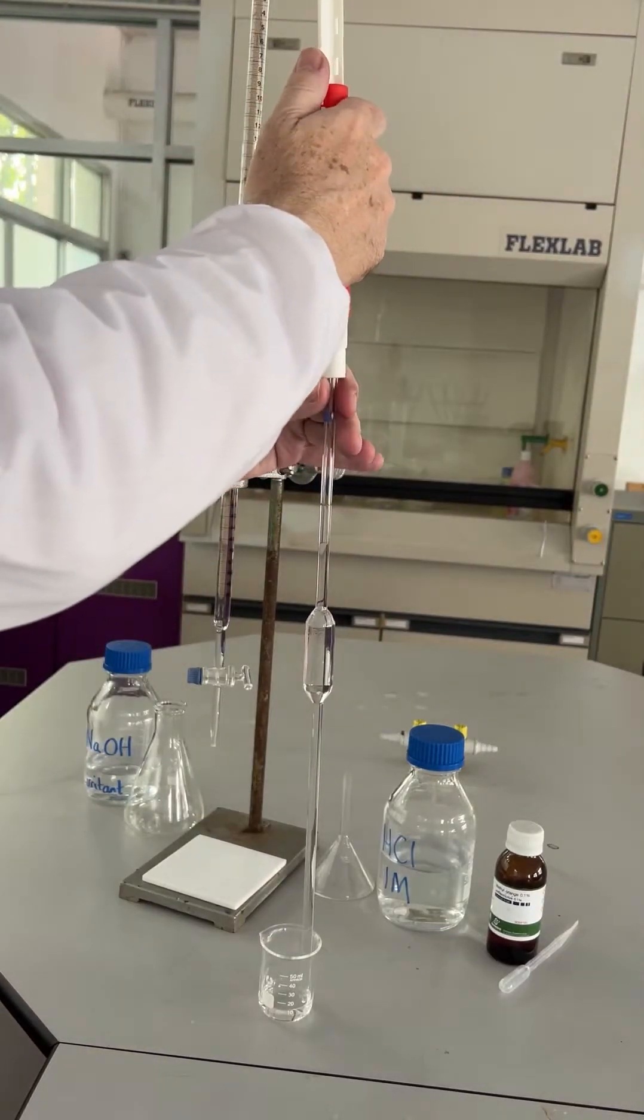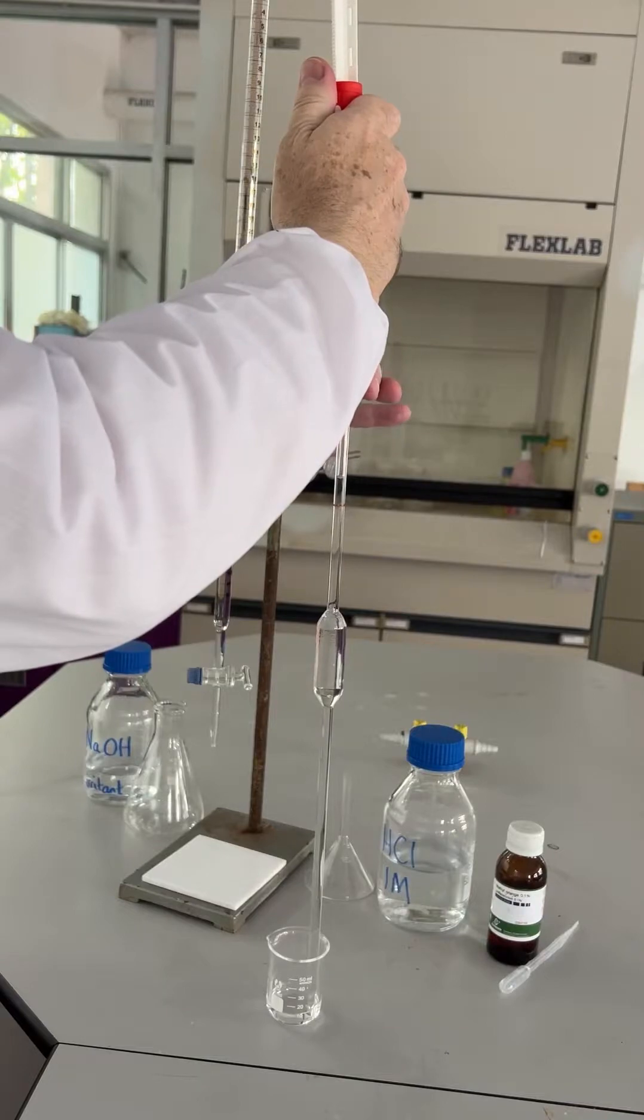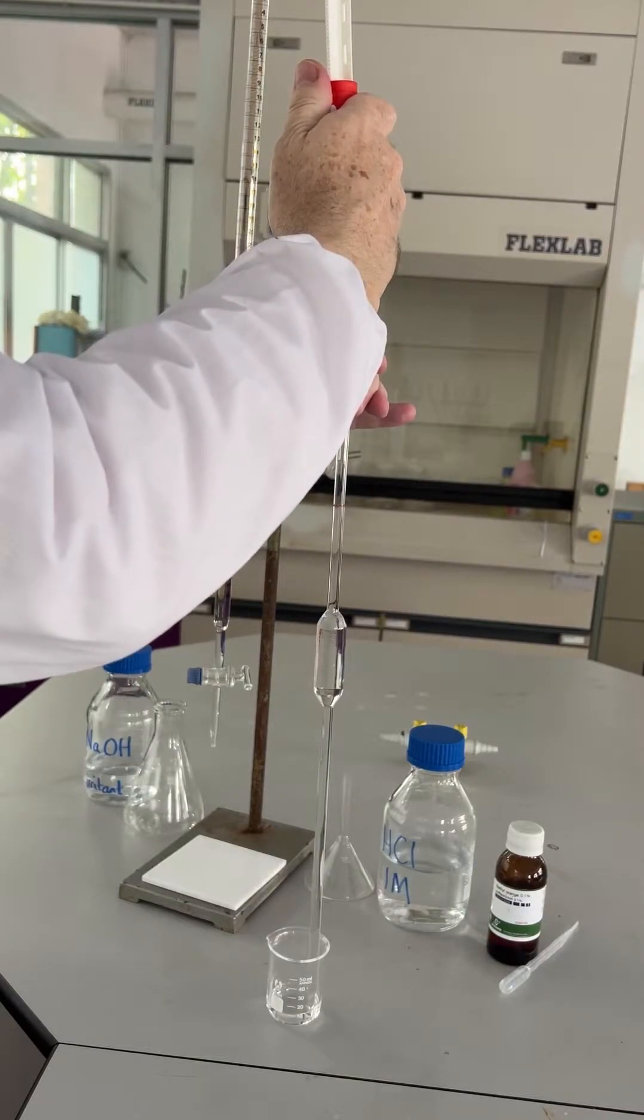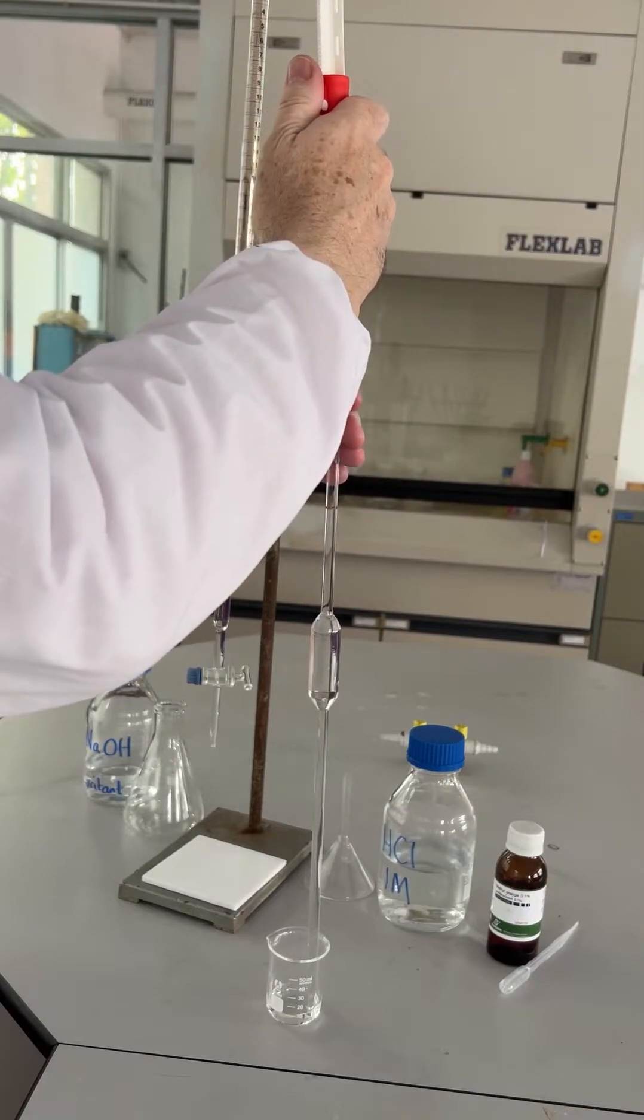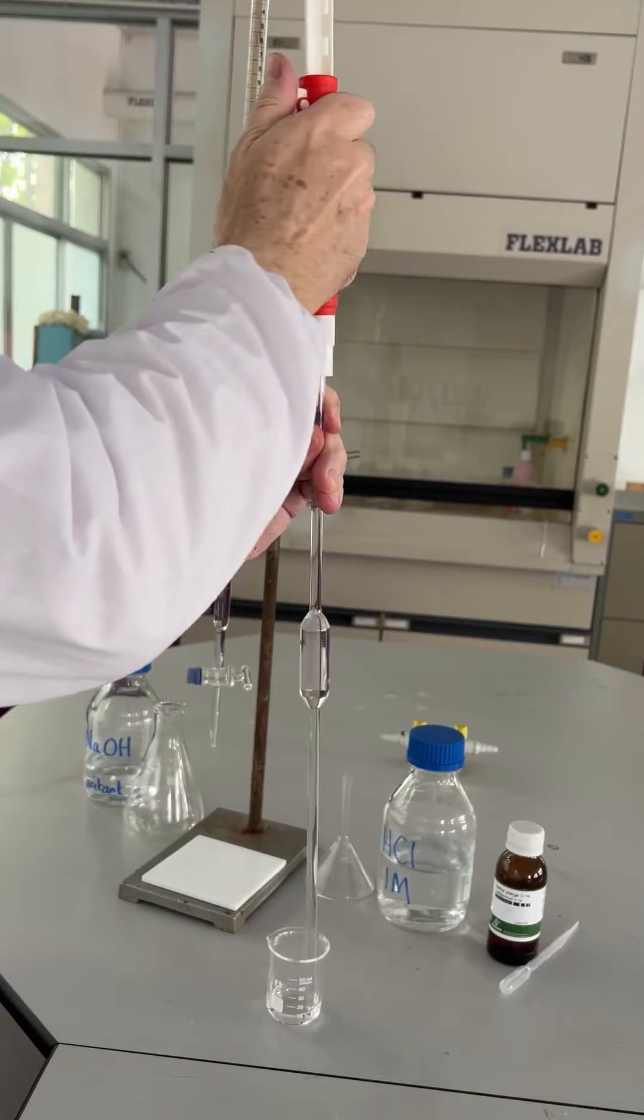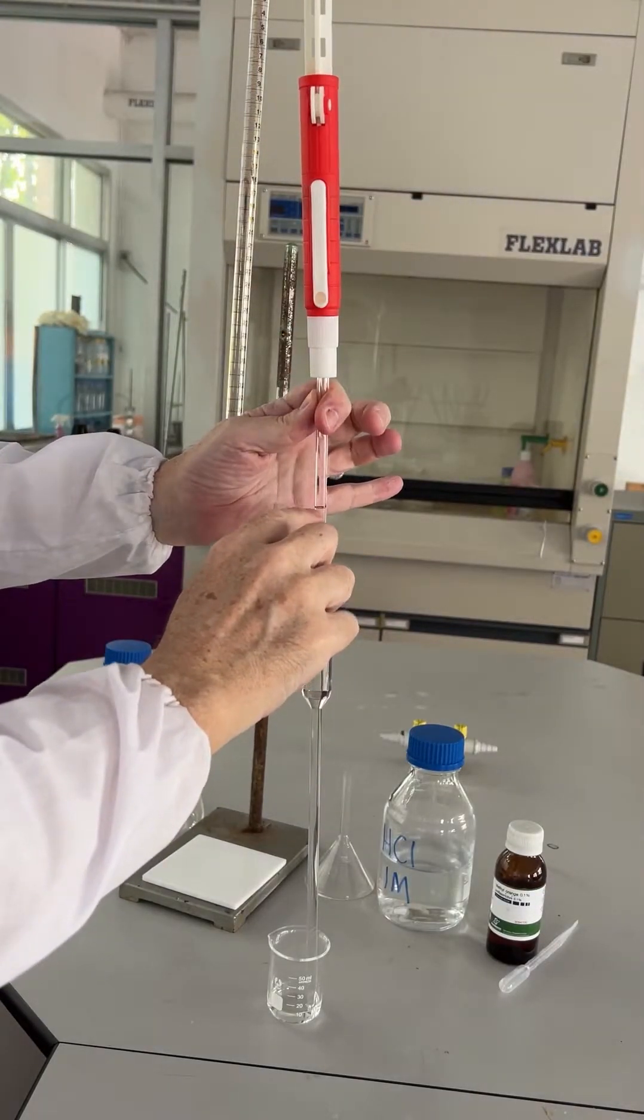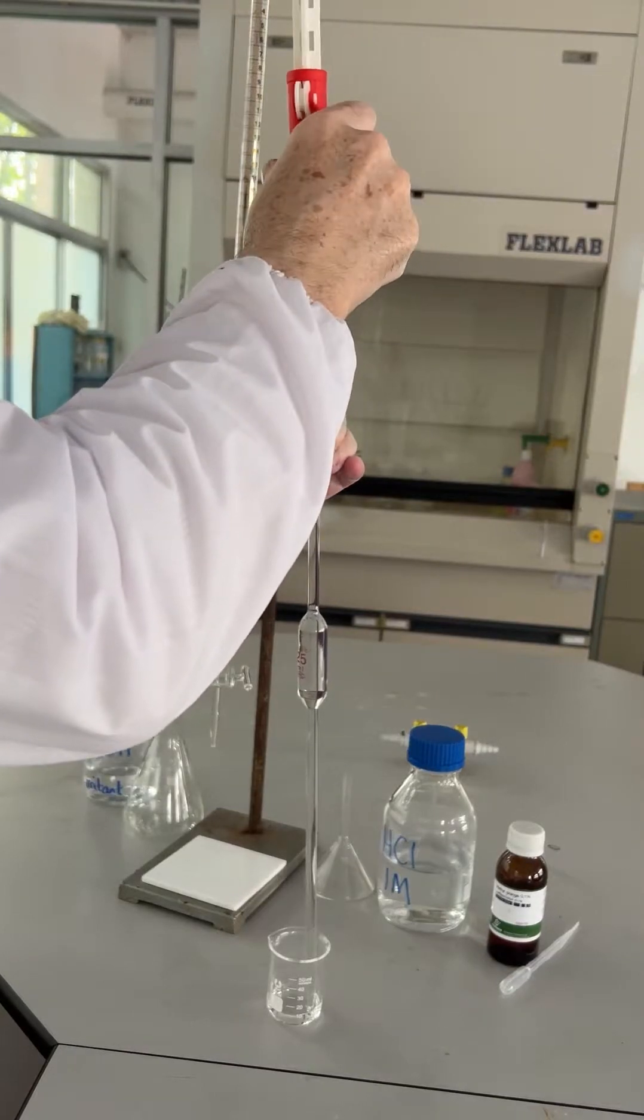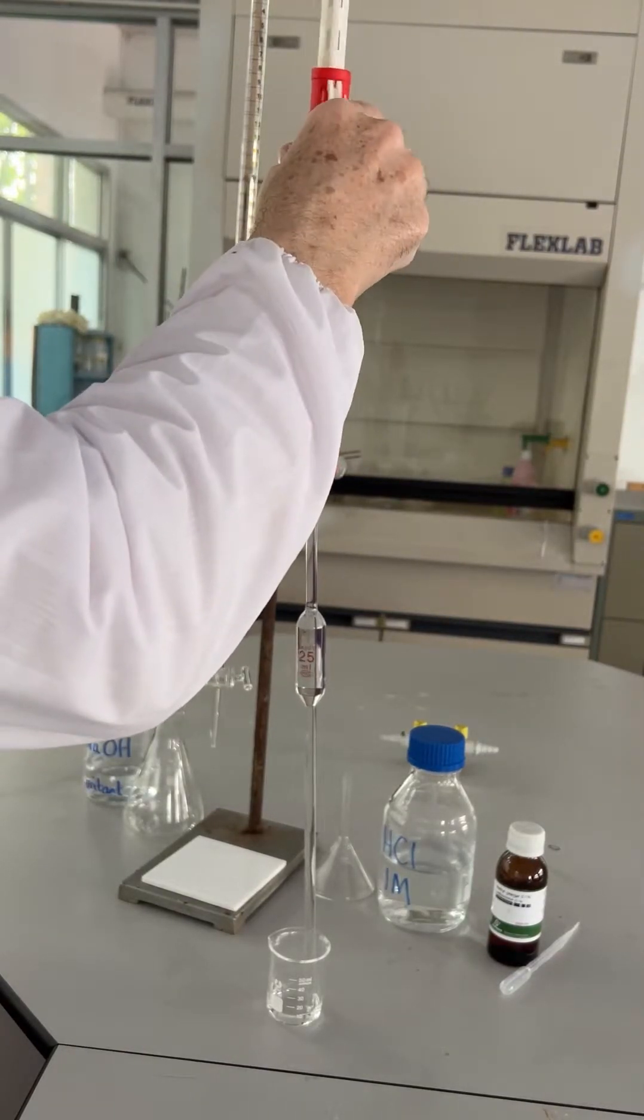First we pipette 25 cubic centimeters of the sodium hydroxide into a flask. We're using a pipette filler but I prefer to lower the volume using my finger. So we're going to lower the level of the fluid down to the line. And as I say, I prefer to use my finger here.